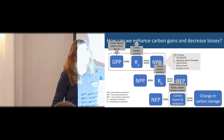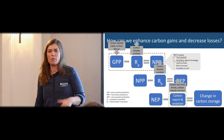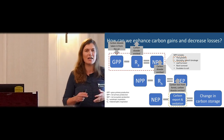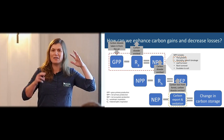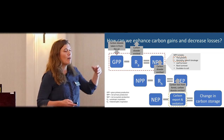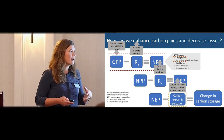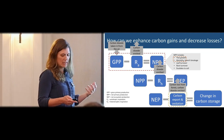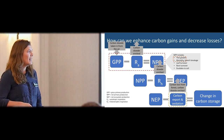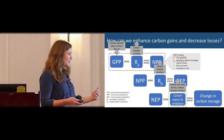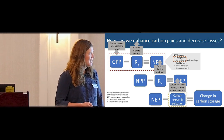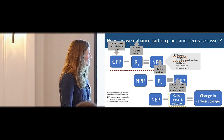When we look at the forest more broadly, we have to subtract respiration from heterotrophs — fungi, bacteria, amoebas, all the various things breaking down organic matter and releasing carbon dioxide back out. That gives us net ecosystem production or net ecosystem productivity.